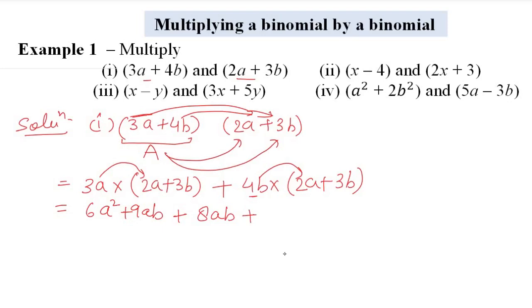Then 4b × 3b = 12b². Now we simplify by combining like terms: 9ab + 8ab = 17ab. The final answer is 6a² + 17ab + 12b².